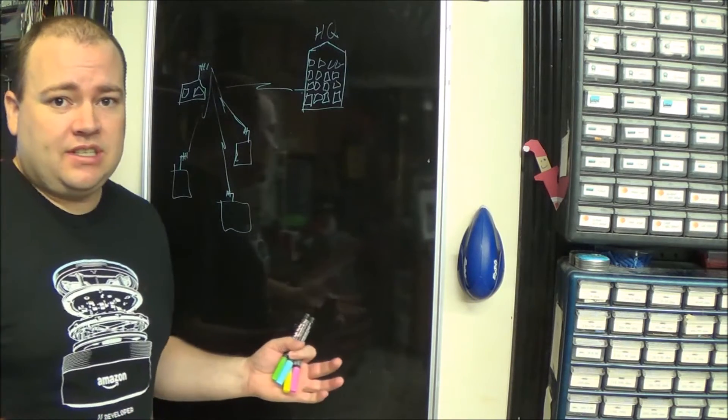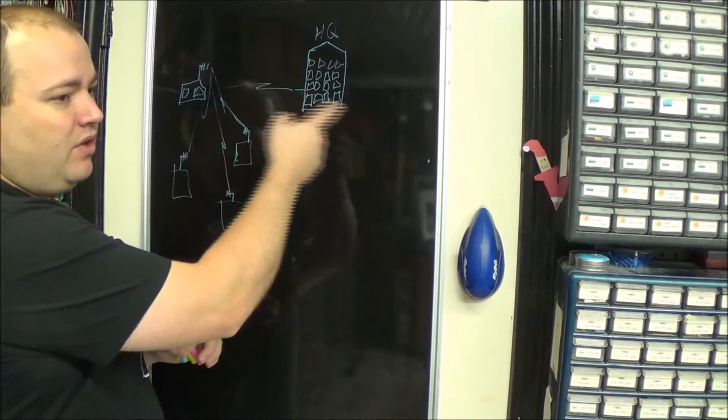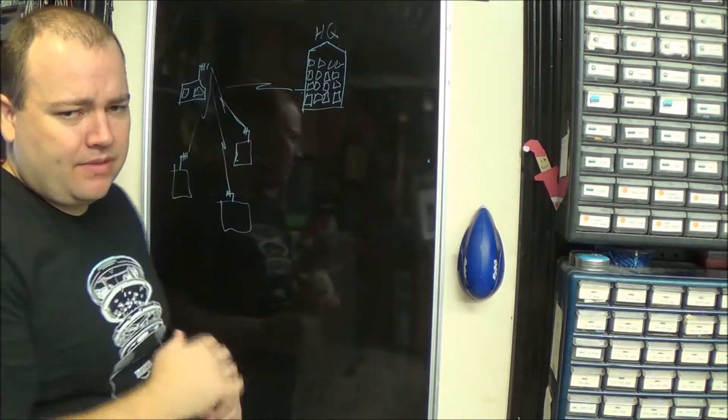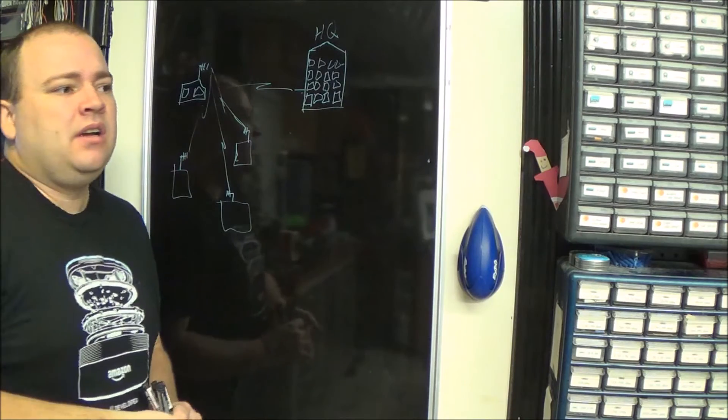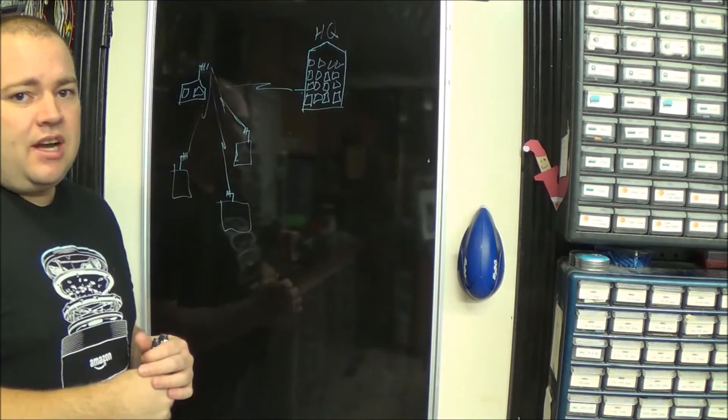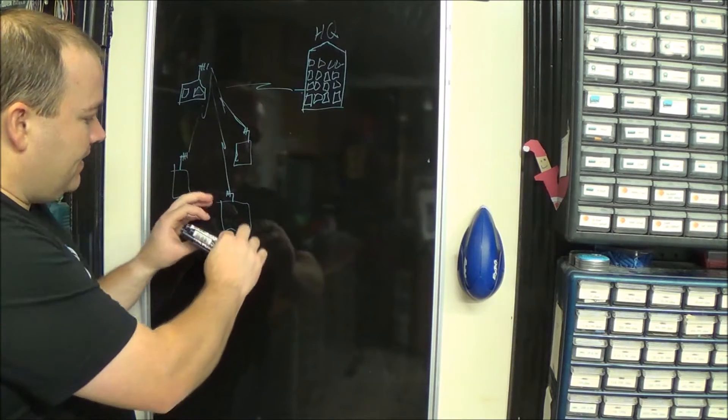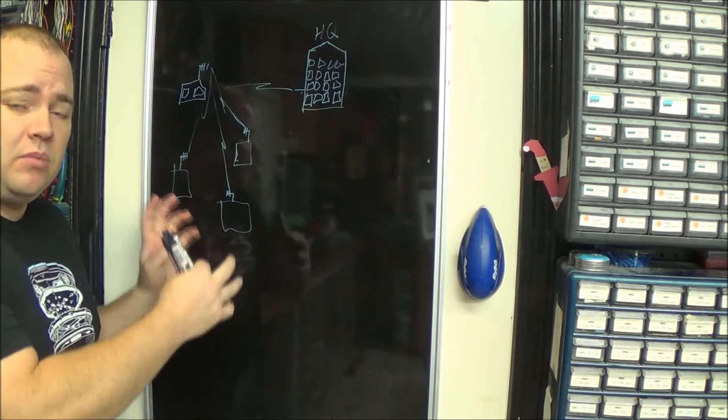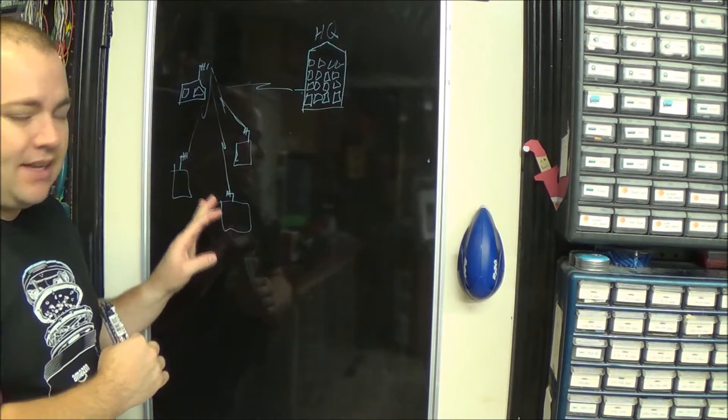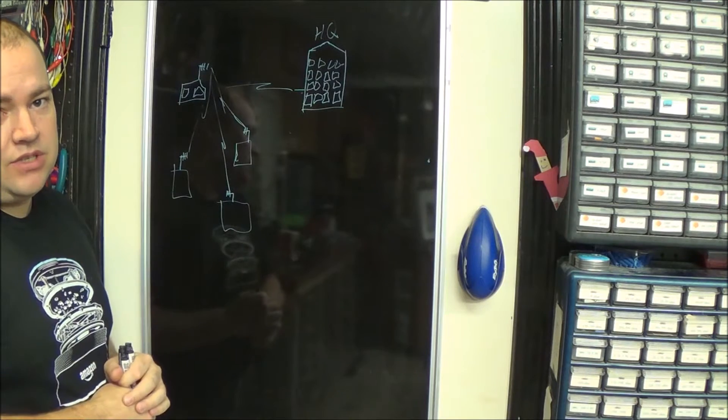So what I usually see is oil and gas companies just pulling the data out of the devices every hour which a lot of times is okay. But if situations start changing rapidly or alarms go off, it would be nice for that data to instantly show up.